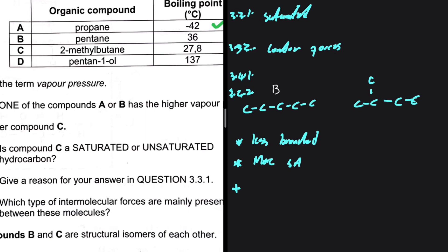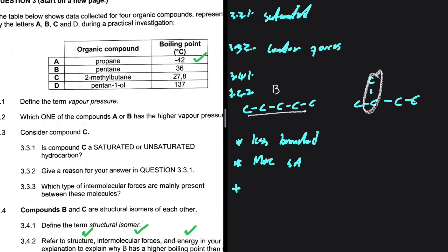Right. So B is less branched compared to compound C. As we can clearly see, this is straight and here we have a branch. Less branched will mean more surface area. More surface area, stronger intermolecular forces, more energy is required to overcome those intermolecular forces. I hope that is clear.